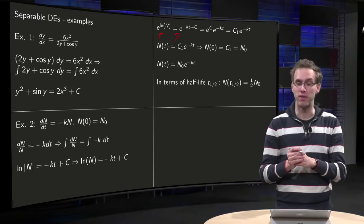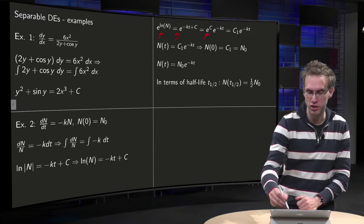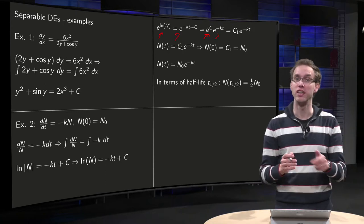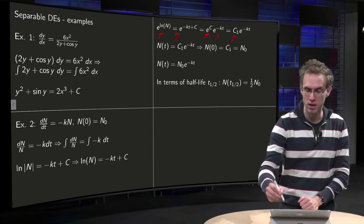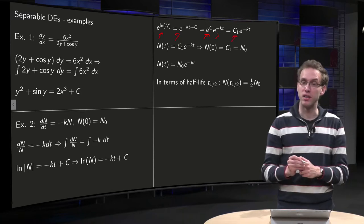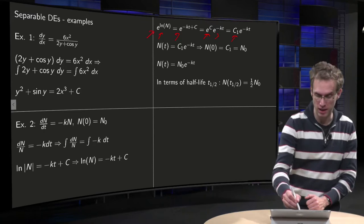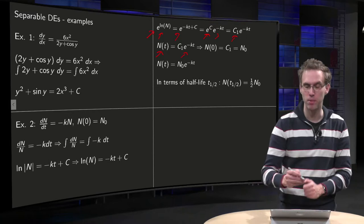You can simplify the right-hand side a bit. You can write it as e to the power c times e to the power minus kt, but if c is a constant, then e to the power c is also a constant, so let's call it c1. And then we can simplify the left-hand side, of course, because e to the power ln n is just n. So n of t equals c1 times e to the power minus kt.